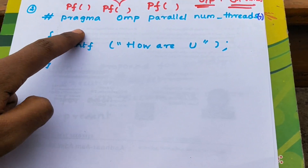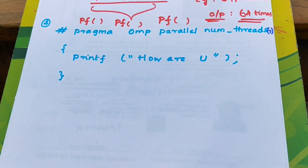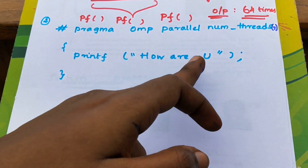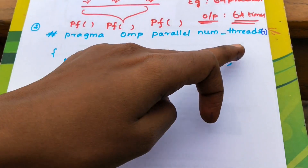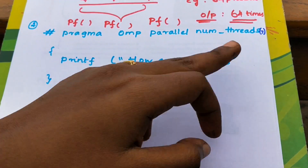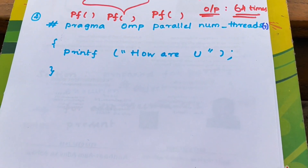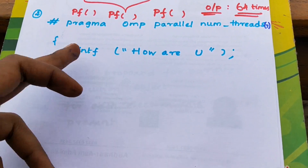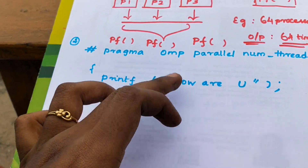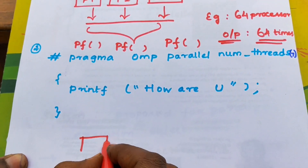Second MCQ: pragma omp parallel num_threads — that means 7 threads, meaning 7 processors. So initially, the print statement says 'how are you.' Each of the 7 processors individually executes the print statement 'how are you.'